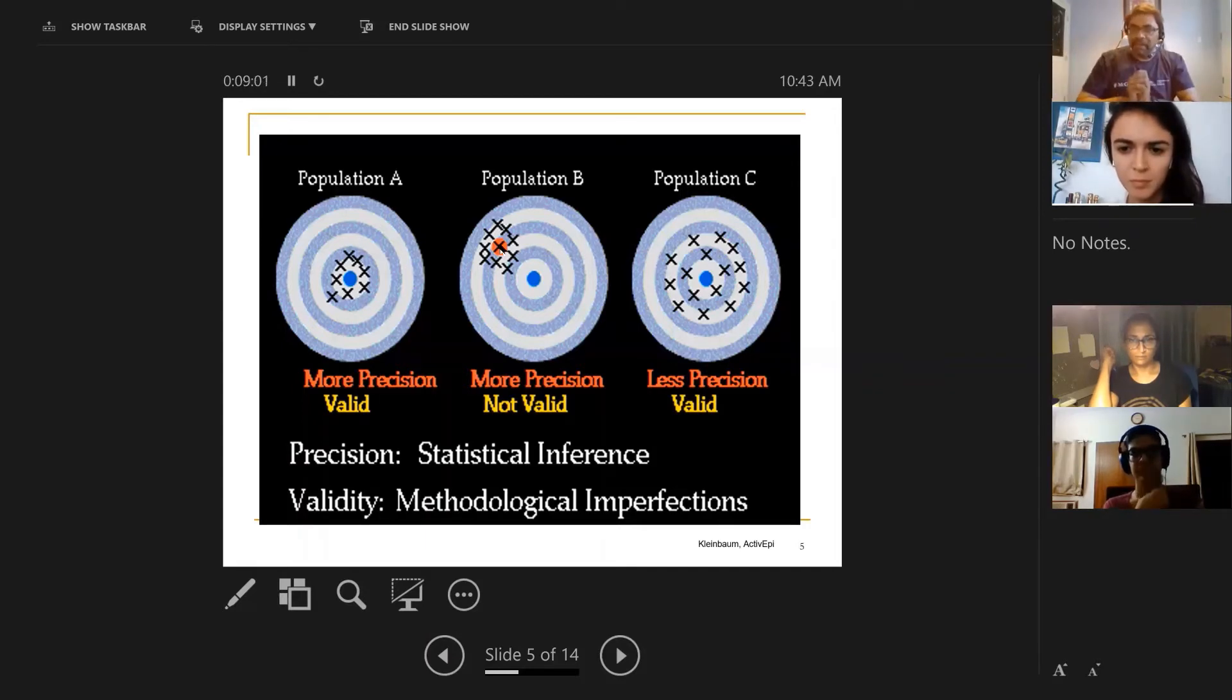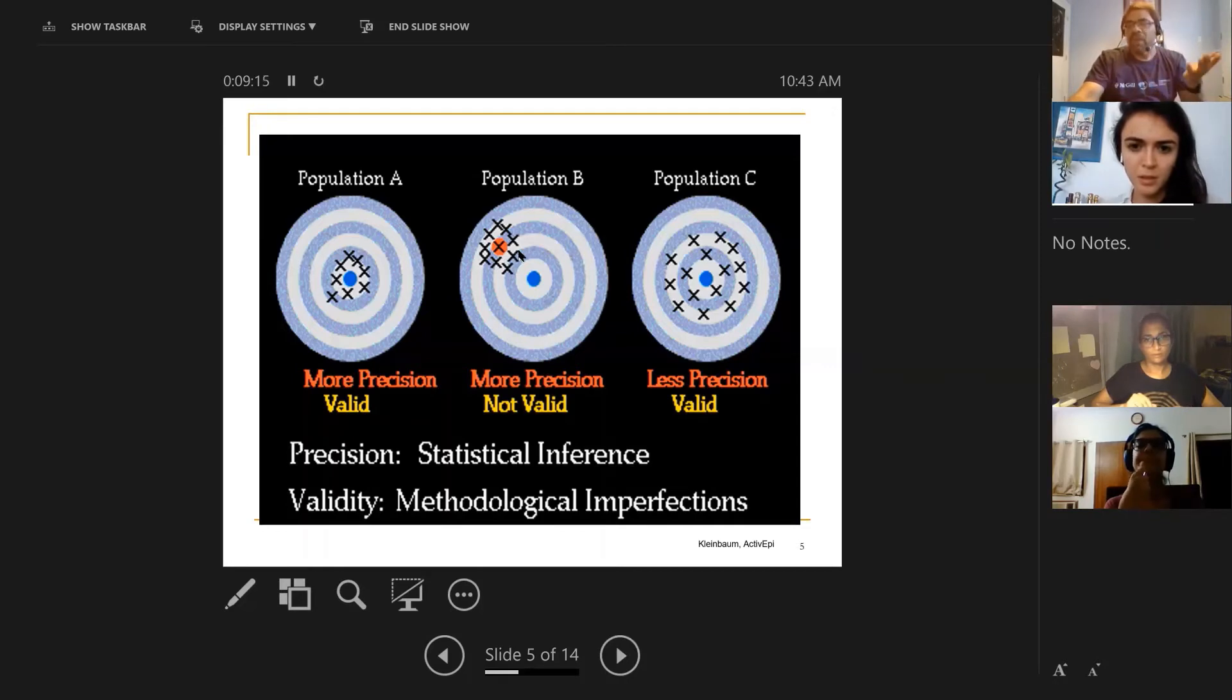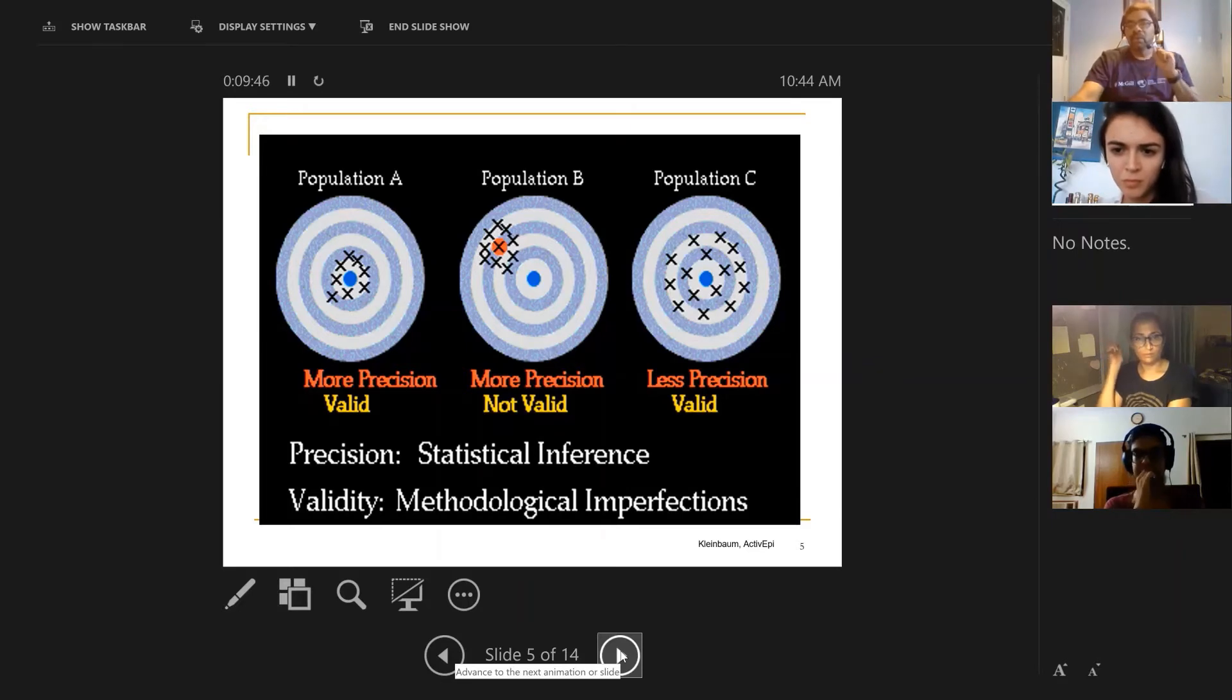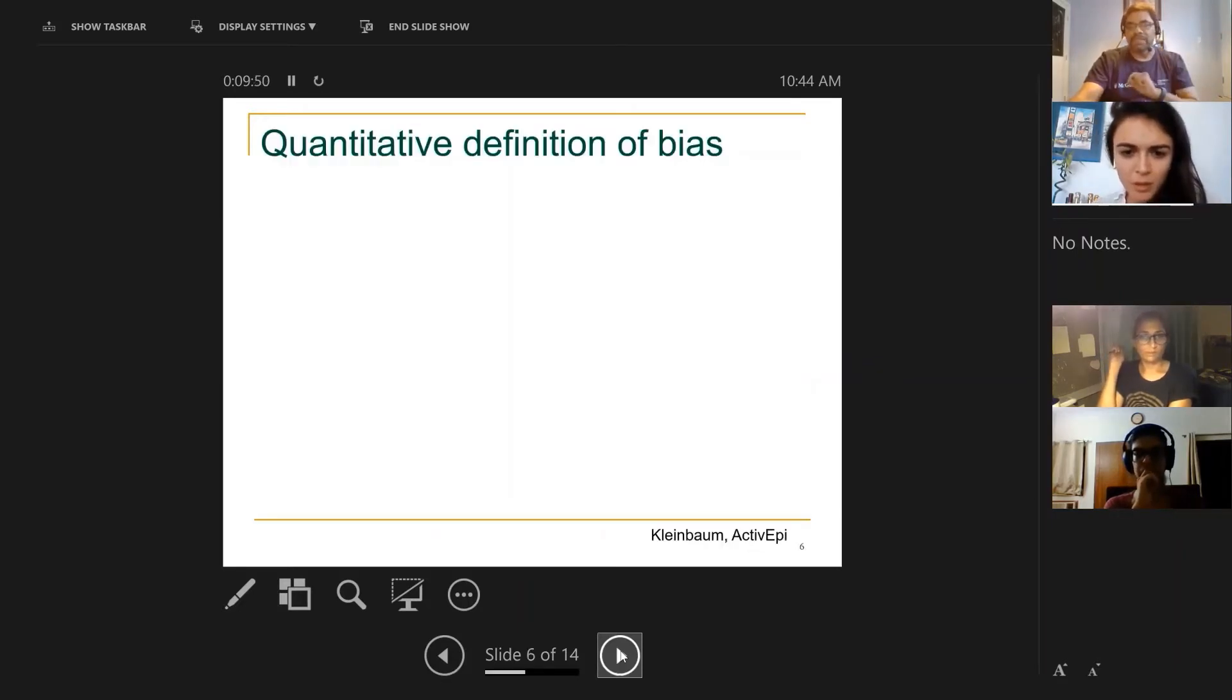In population B, you have a unique situation. You are precise—you're consistently hitting the same area on the dartboard—but you have missed the bullseye. You have missed the truth. You may have consistently overestimated it, but you've done it with precision. This is not a happy situation to be: you're precise but you're not valid. I would rather be valid even if it means I'm less precise. You can buy tremendous precision in a biased estimate and that's not very helpful. Population C is where you are somewhere near the bullseye but your scatter is too much. You are less precise but you're fairly valid. Validity and precision are two related concepts: one is to do with random error, second is to do with systematic error.